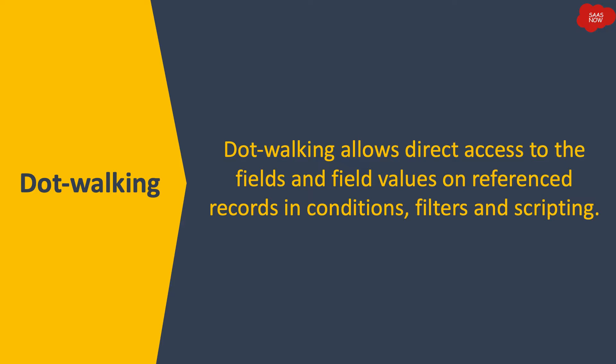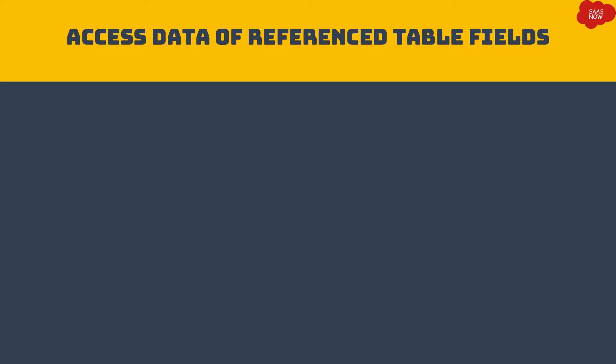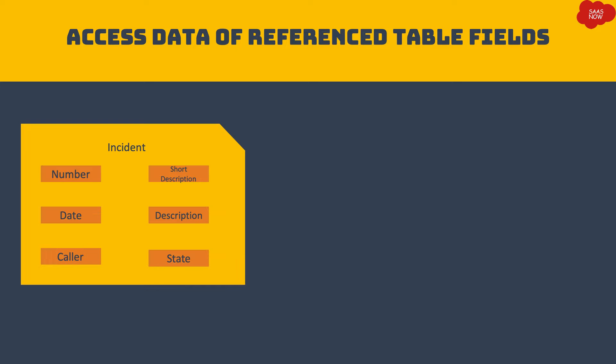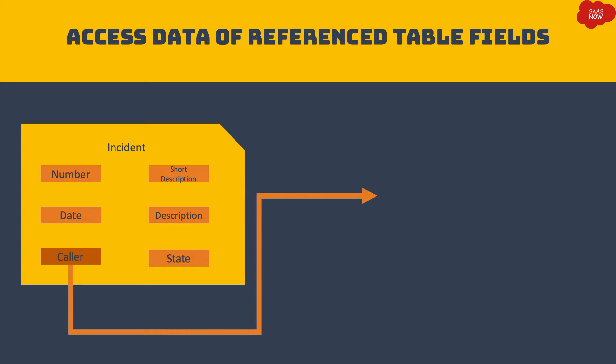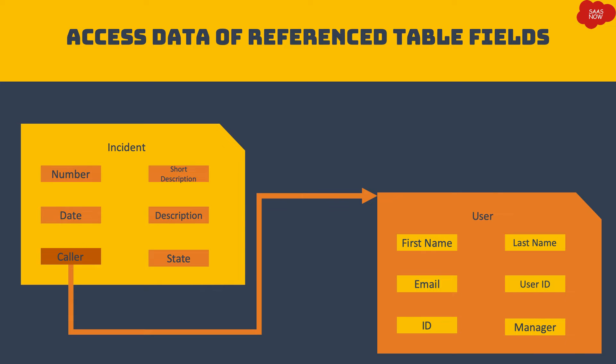In that case you can access caller location by dot walking. This is the incident table — you can see its table fields. There is one field called the caller field, and this is a reference field, meaning it references the user table, which is a different table. That user table has its own fields, so if you want to access the caller's first name, last name, or email, you have to use dot walking.